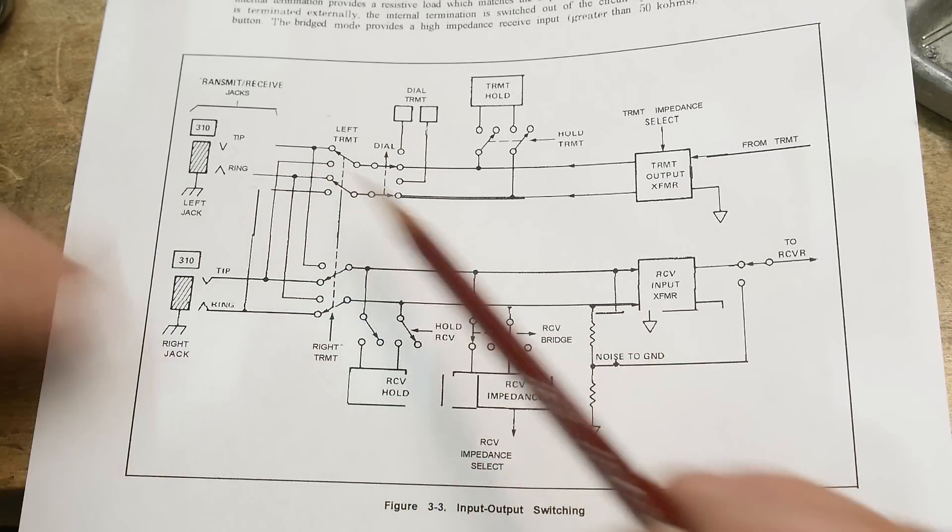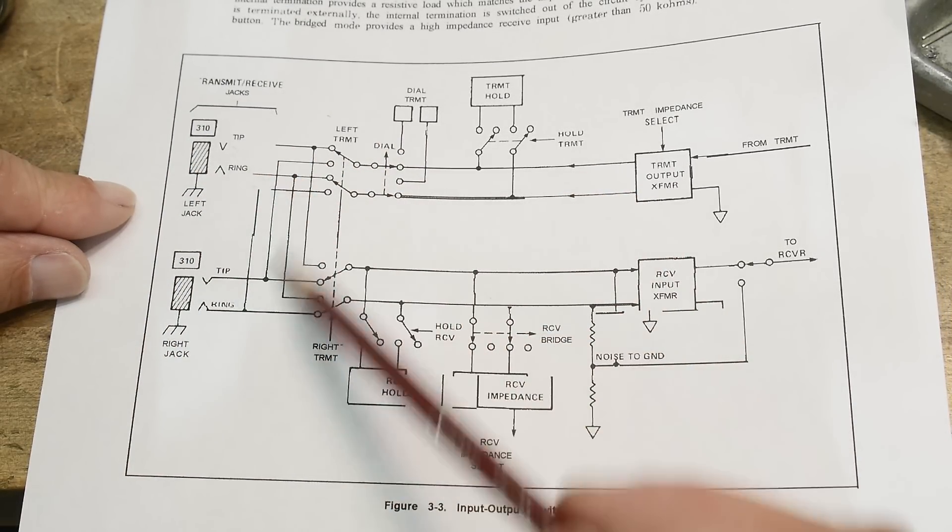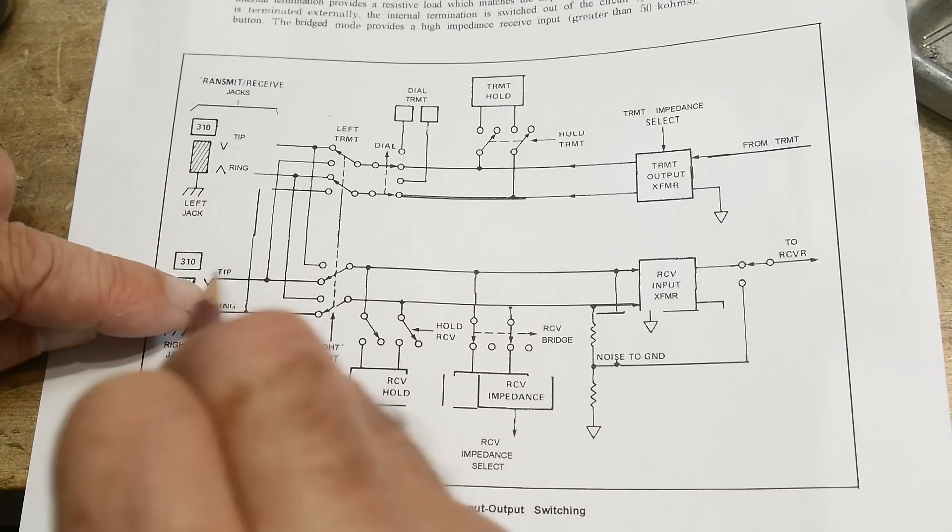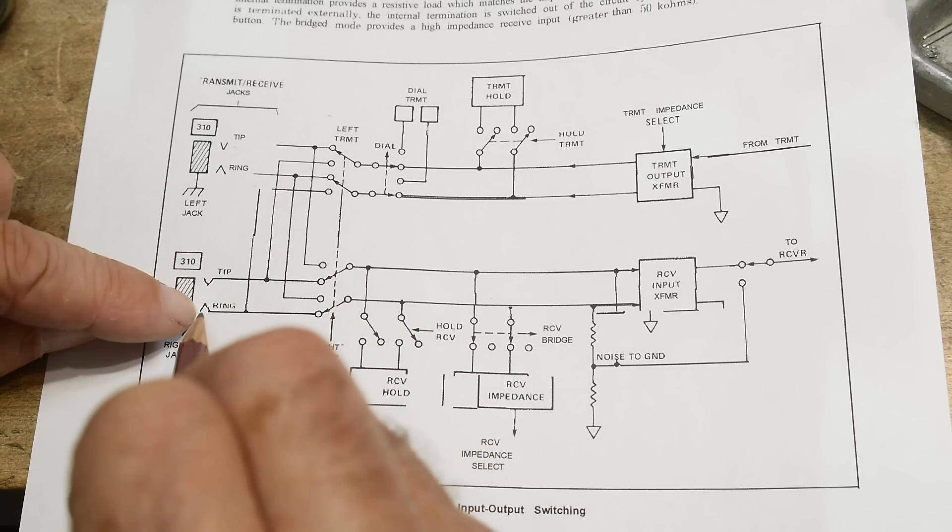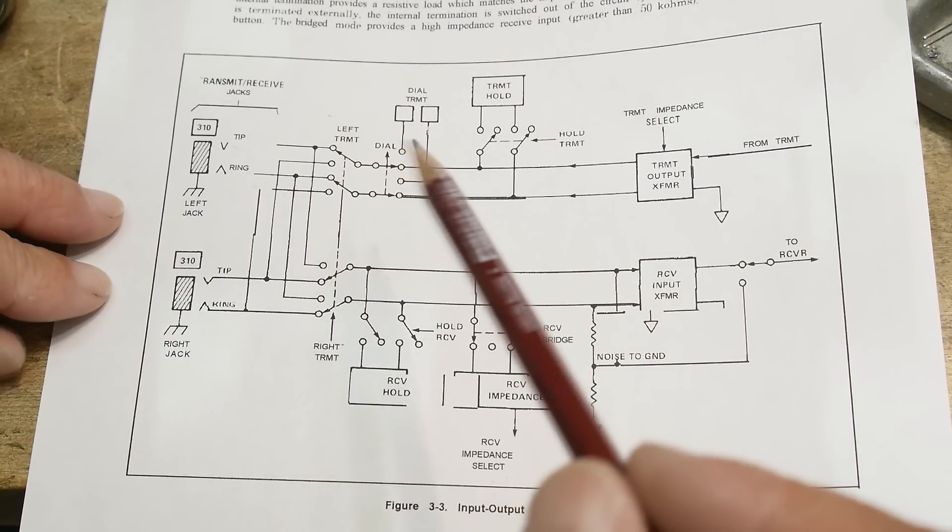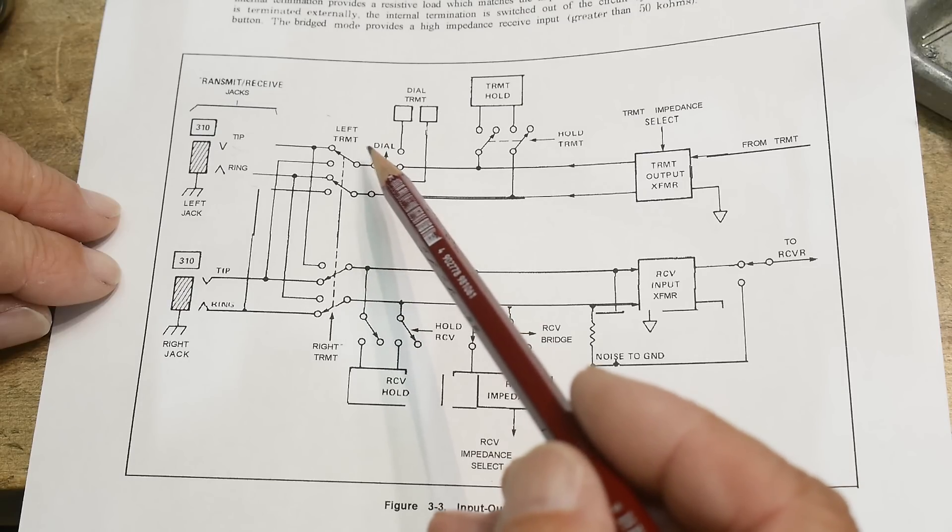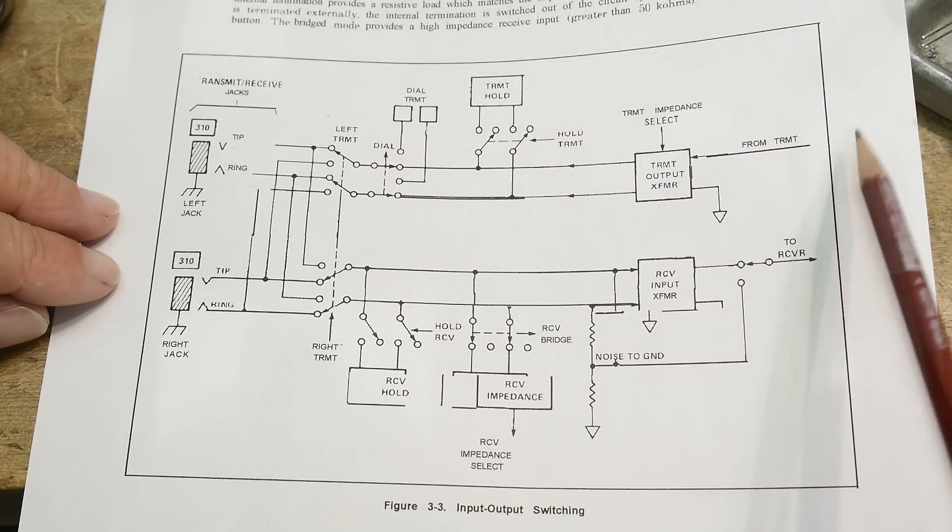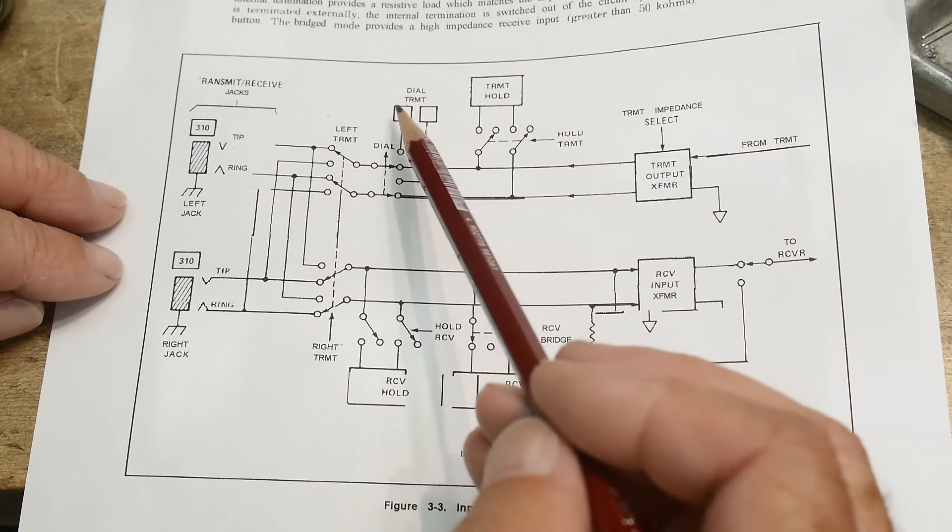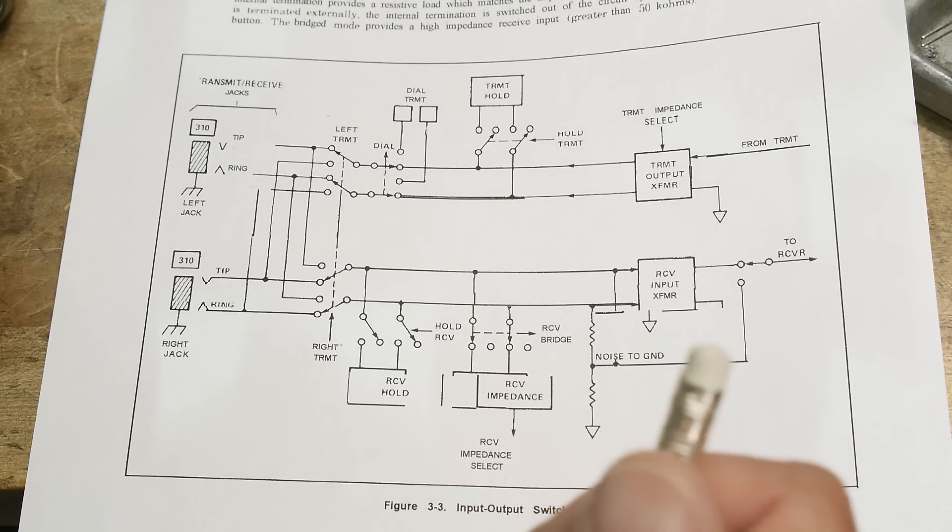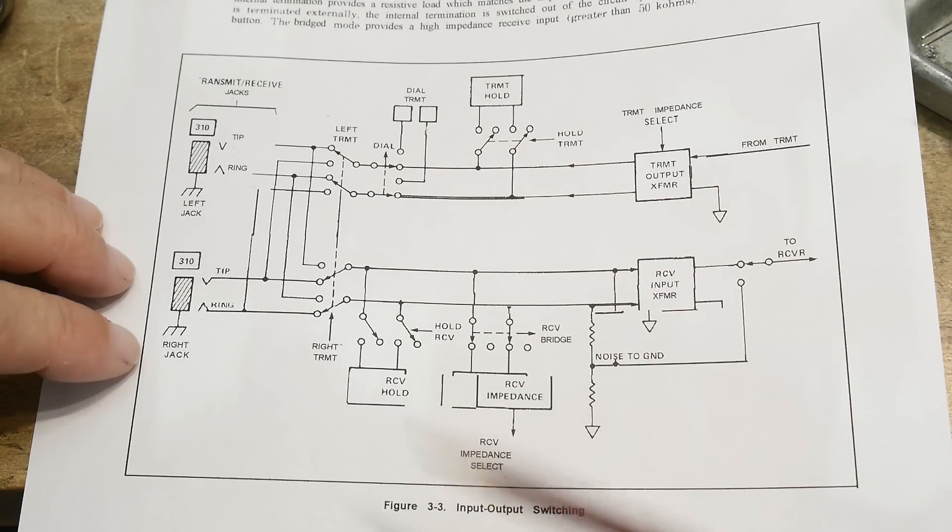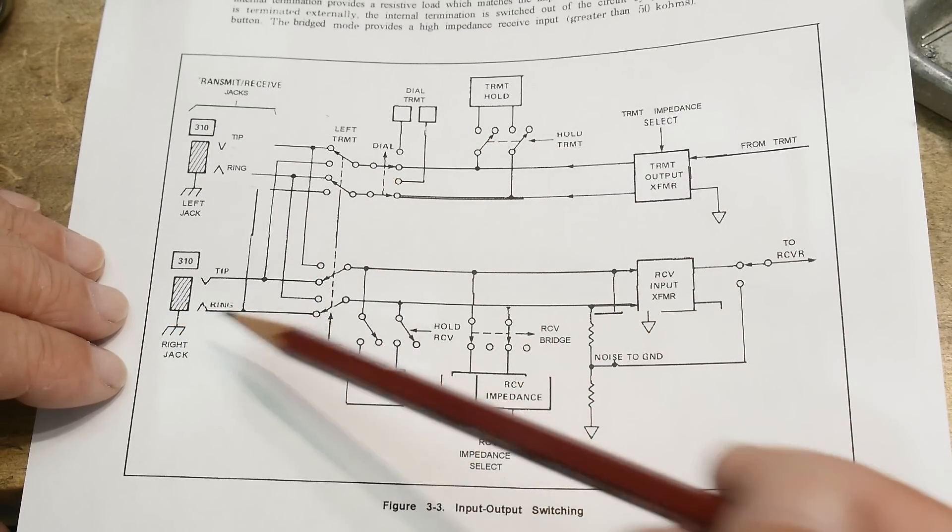The ring and the tip come in and they can get switched—they can go this way or that way, you can swap them or hook them together. We have a transmit section and a receive section. The transmit comes here, goes through an output transformer into this loop. There's also something called hold and something called dial—I don't know what those protocols are for, like when you pick up the phone there's a dial tone. This is the transmit, and the other is the input receiver, and it can do several things.